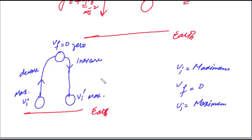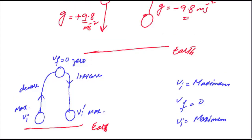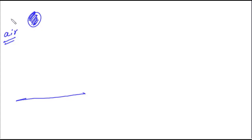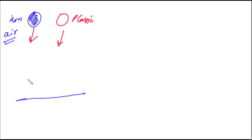ایک آخری اور بہت interesting fact یہ ہے کہ اگر air موجود ہو اور ہمارے پاس ایک iron کی ball اور ایک plastic کی ہلکی ball ہو، اور ہم دونوں کو same time پر same height سے چھوڑیں، تو iron کی ball جلدی زمین پر پہنچ جائے گی کیونکہ یہ heavy ہوتی ہے، جبکہ plastic کی ball بعد میں پہنچے گی۔ یہ آپ real life میں بھی observe کر سکتے ہیں۔